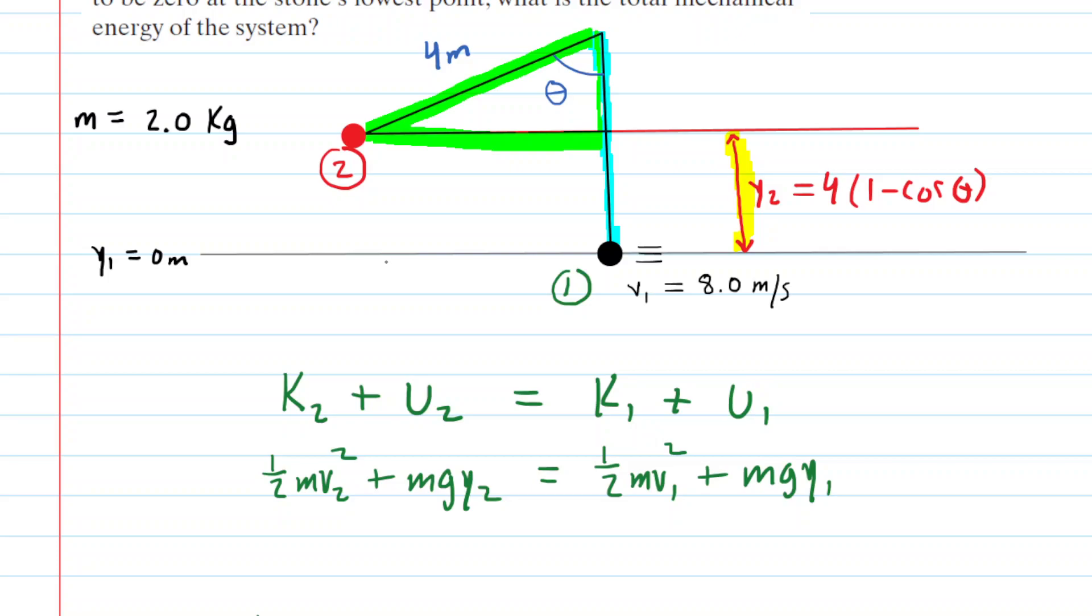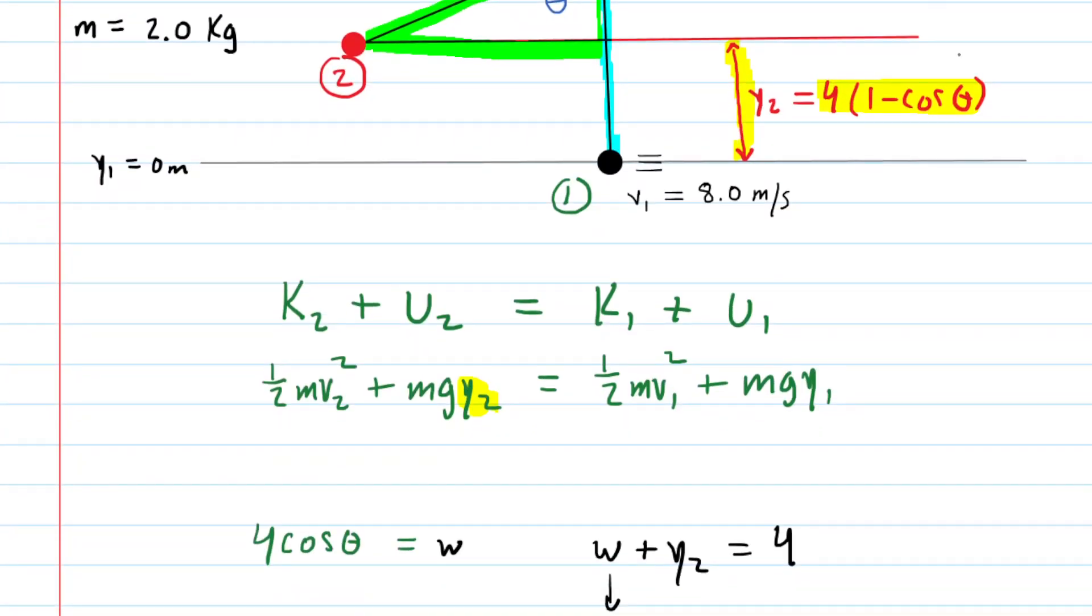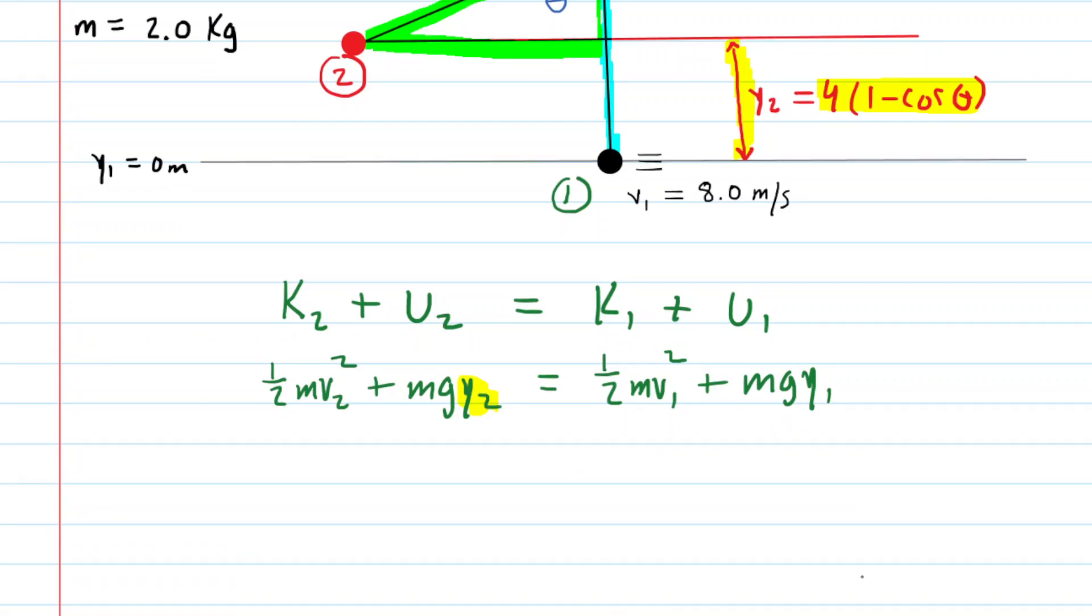And we can begin to make some substitutions here as well, because check it out. In the equation, we have that y2 right there. Well, remember, y2 was the 4 times 1 minus cos theta. So, let's go ahead and plug in 4 times 1 minus cos theta for that y2. In addition, we know that the initial height, y1, is equal to zero meters. So, what that means is that that last term, you'll have mg times zero. That'll make that term go to zero. So, that simplifies as well.